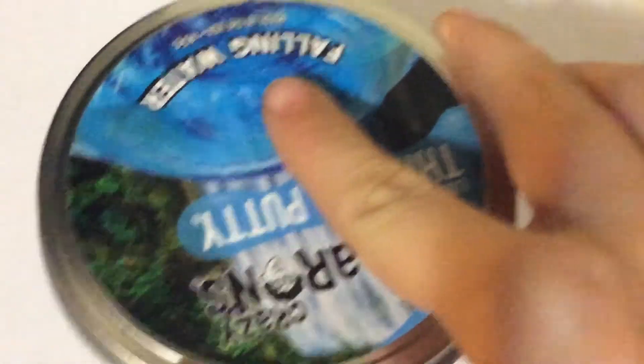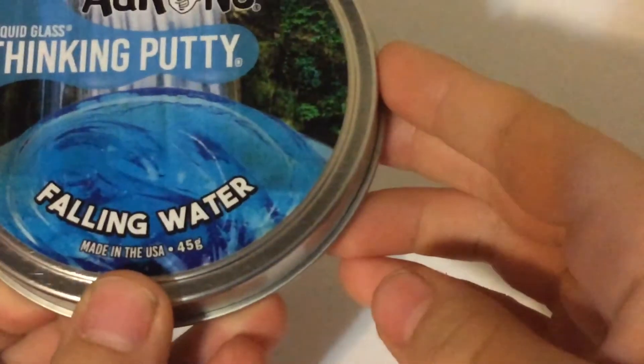So what you're gonna need is obviously a piece of paper, a pencil, and something round. I have this thing, it's from some putty, so this is what I'm gonna use. That's what you need to use, something round, whatever you want that's round.